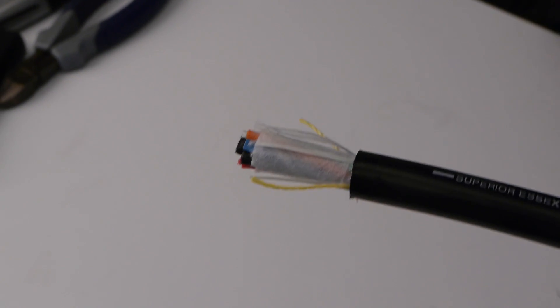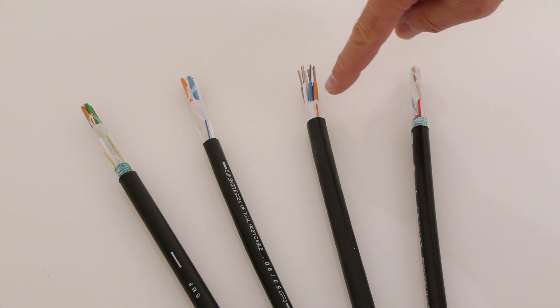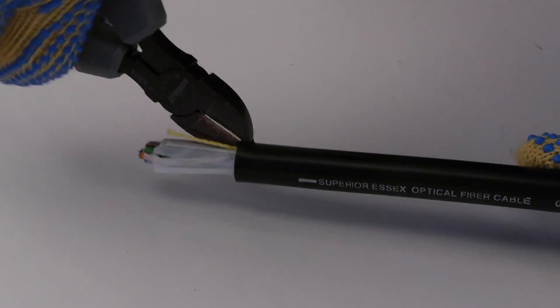Locate a rip cord below the jacket or armor at the end of the cable. There will be one or two rip cords, typically yellow, blue, orange, or red, depending on the cable type. Using the diagonal cutters, cut a notch in the jacket or armor next to the rip cords.